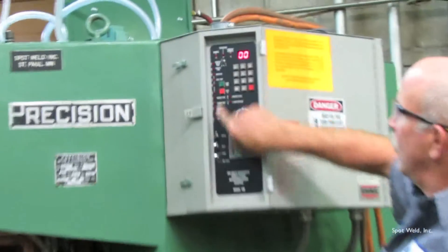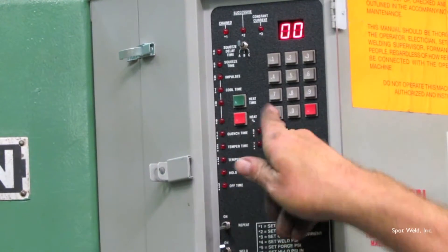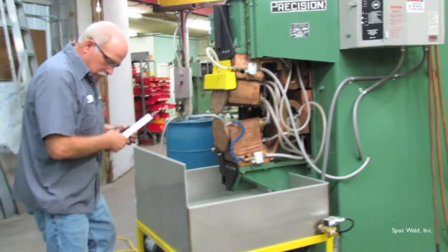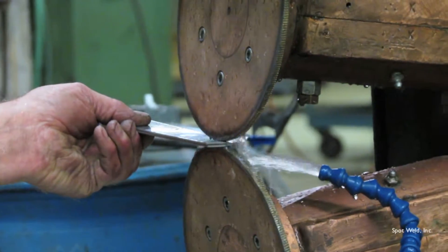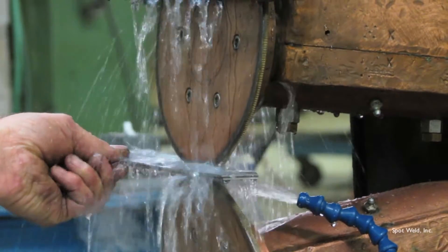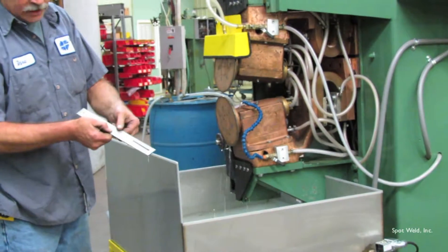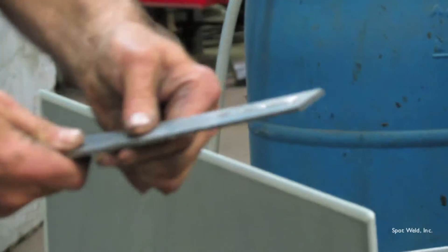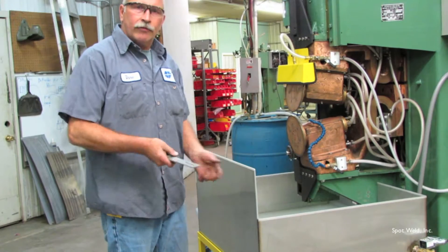That's not a good weld. So we're going to turn up our heat percent. Go right to the heat percent button. Go up to 55%. We'll try another weld. As you can see, we've got a much better weld on each side. What we do now is we do a pull test from the very beginning of the weld and see if we get a weld on it.